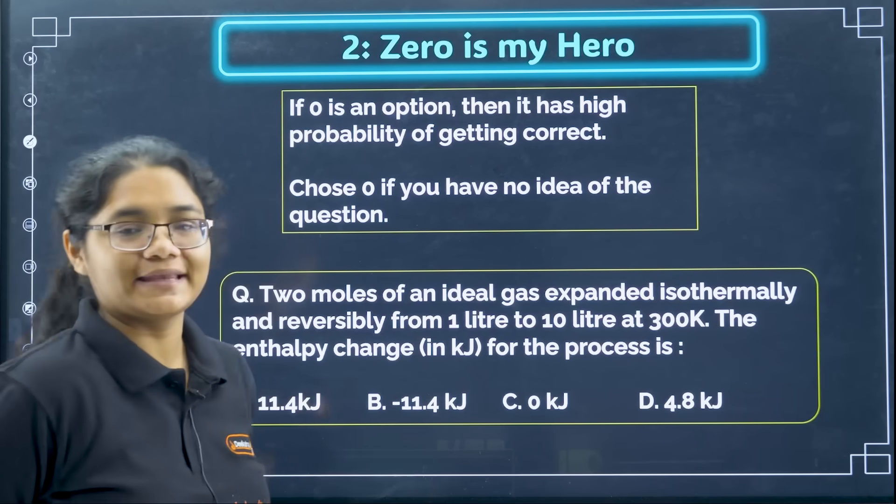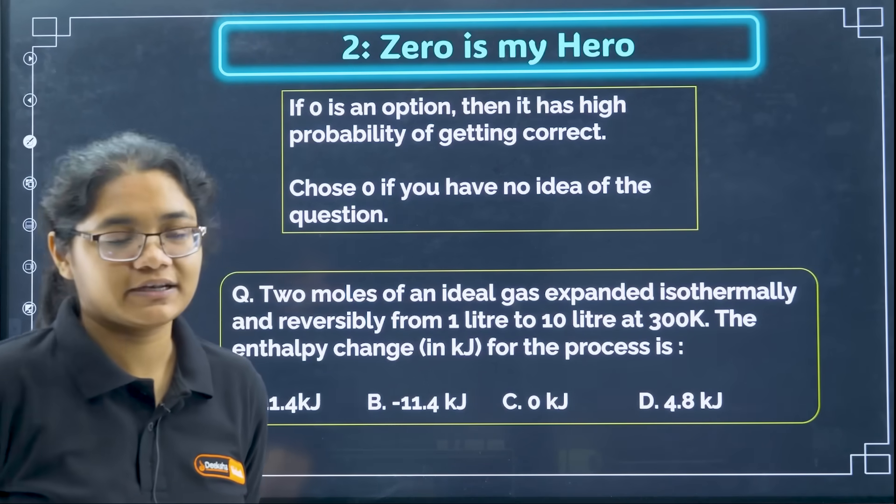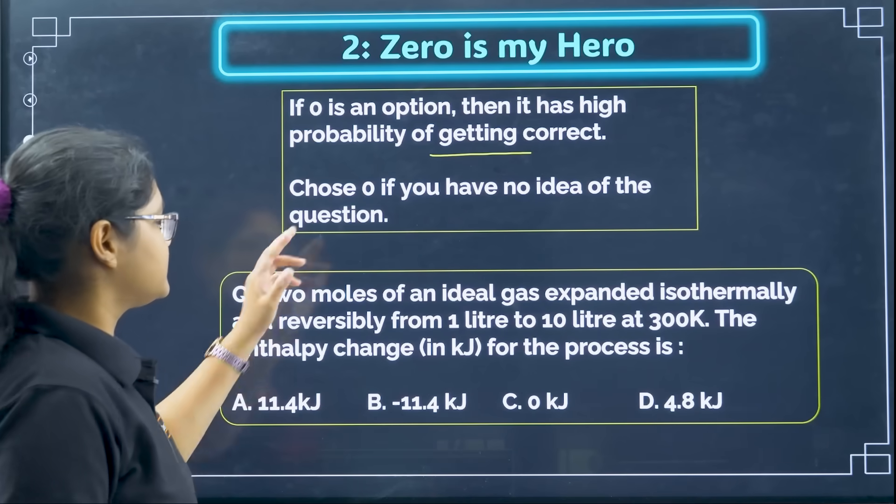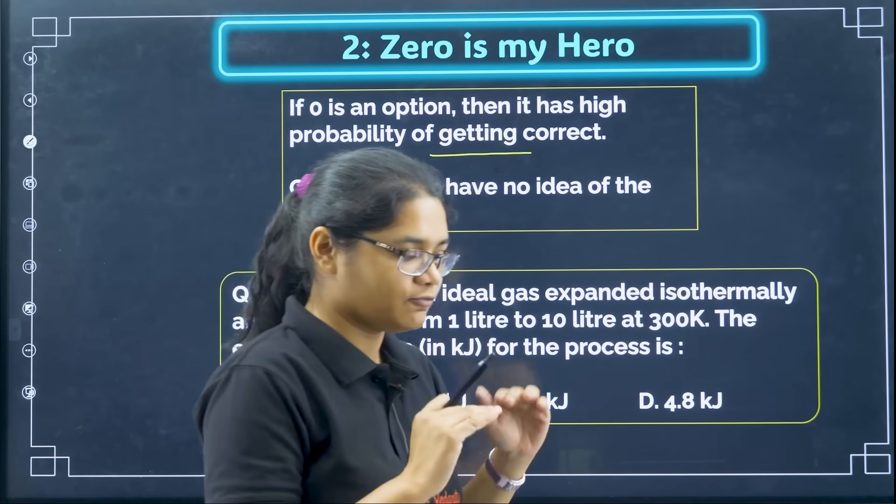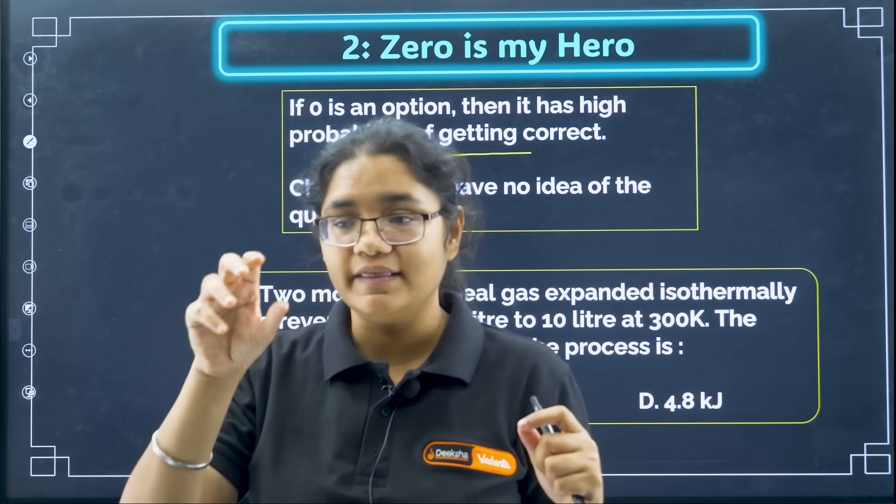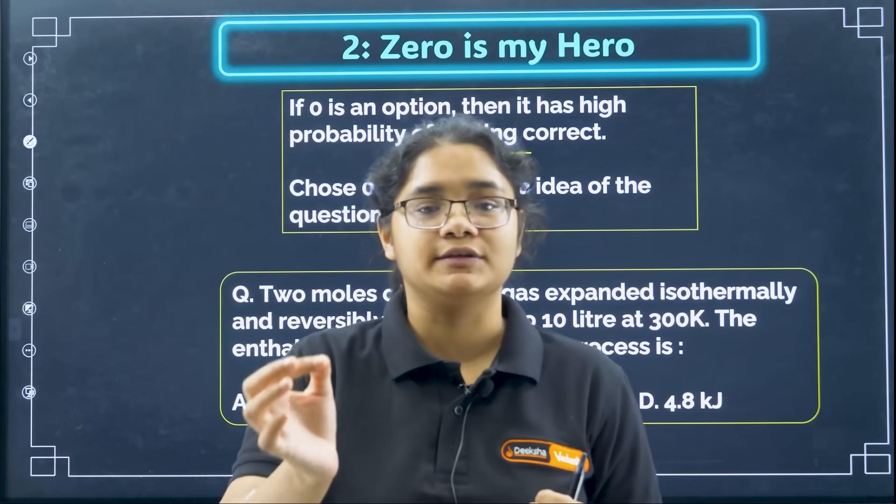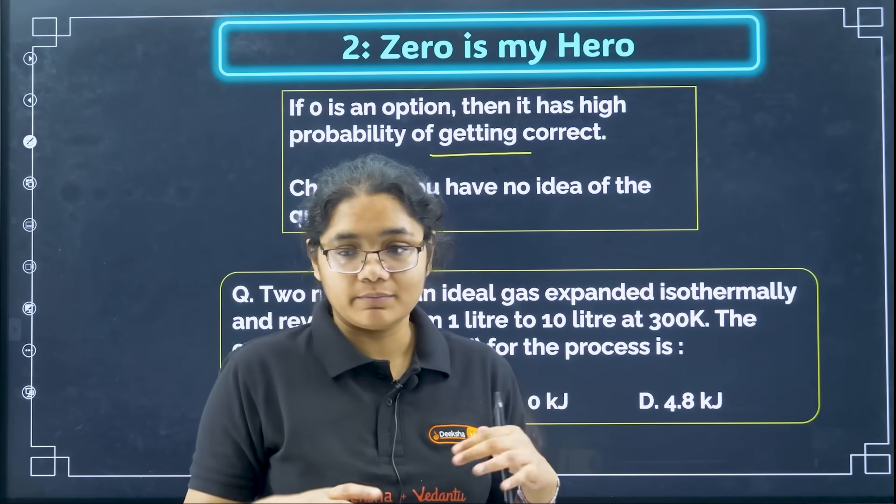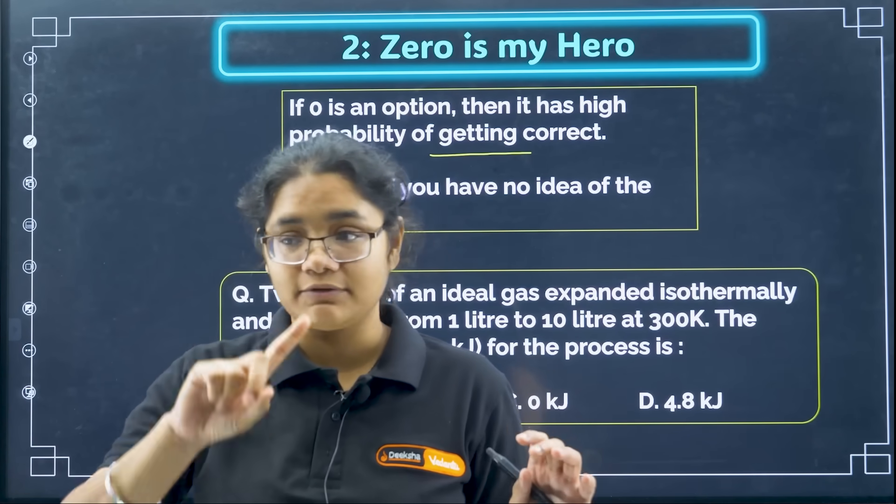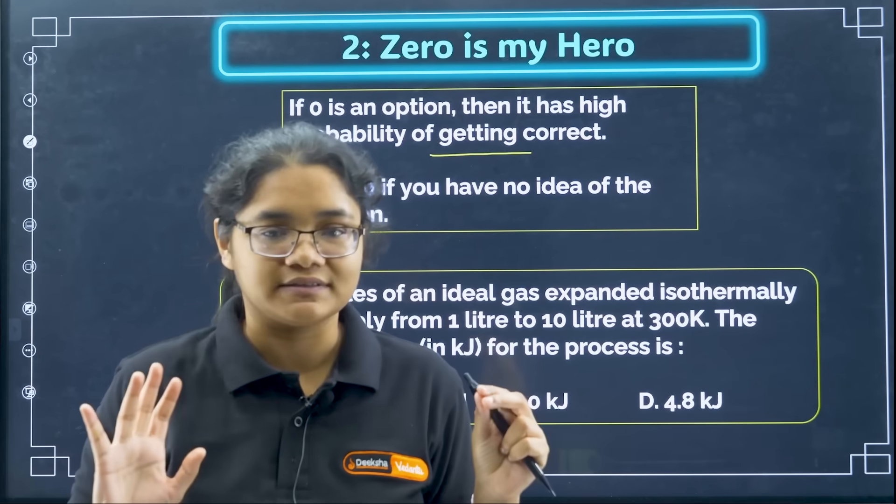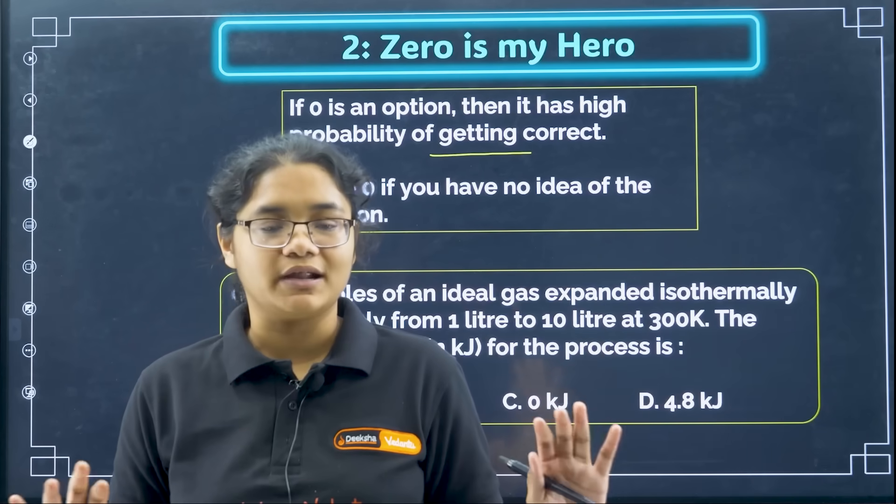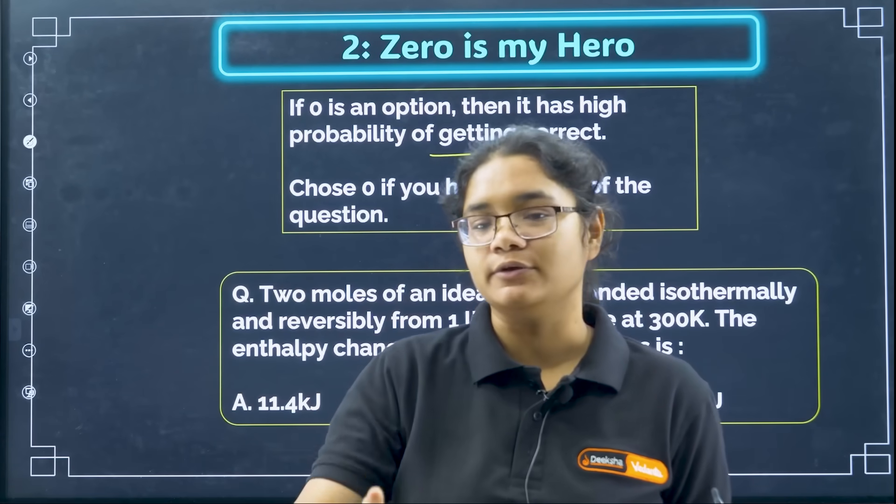Next second point is Zero is my hero. This is a very good option and many of the times it gets correct. So if 0 is an option in any of the question then it has the high probability of getting correct. So choose 0 if you have no idea of the question. So if you find the question and there are four options and you have no clue about that question but you see that one of the option is 0, then you can take a chance by putting 0 as the correct answer. I am not saying that it will always be true but since you don't have any option, you have no idea about the question, if you have to make a guess then definitely go for 0. I am not telling here that if you know the question, if you know the answer and still 0 is the option, go and mark 0. It is not like that please don't misunderstand here. If there is a question about which you have no idea, you don't know how to solve anything about that question and you find 0 as option in that particular question then you can go and mark 0.